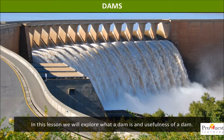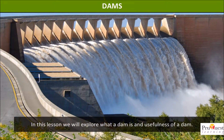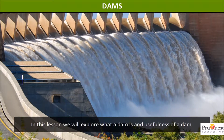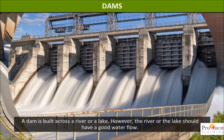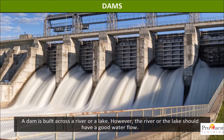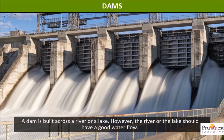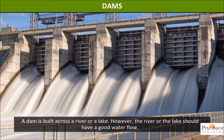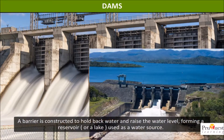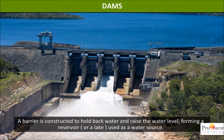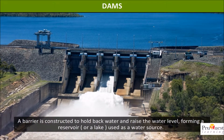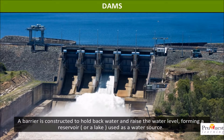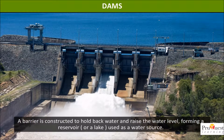In this lesson, we will explore what a dam is and the usefulness of a dam. A dam is built across a river or a lake; however, the river or the lake should have a good water flow. A barrier is constructed to hold back water and raise the water level, forming a reservoir or a lake used as a water source.